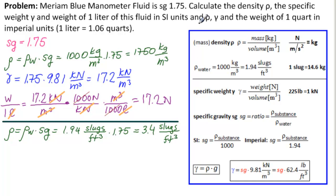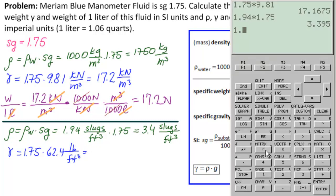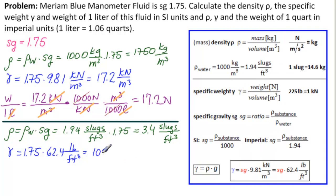And then γ. γ equals 1.75 times 62.4 pounds per feet cubed equals 1.75 times 62.4 and we get 109.2. So 109.2 pounds per feet cubed.